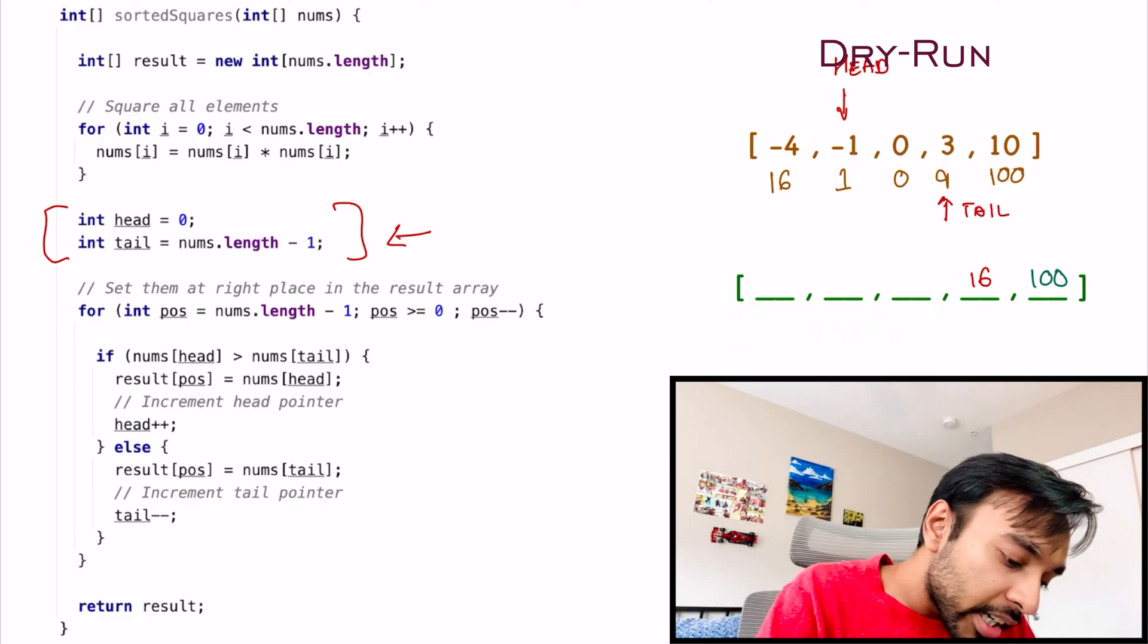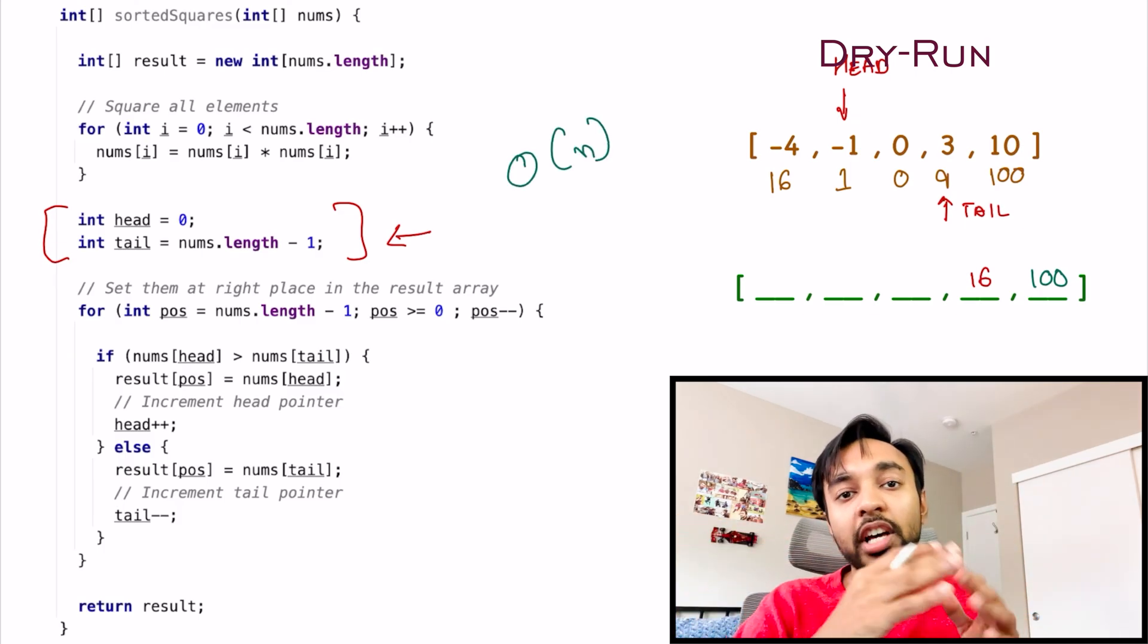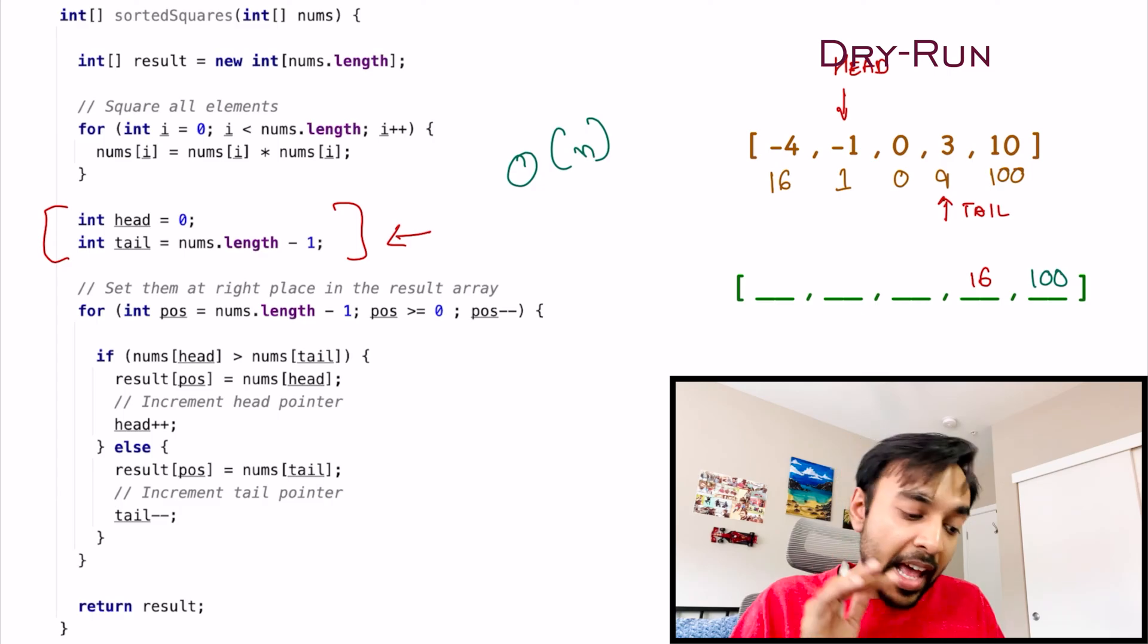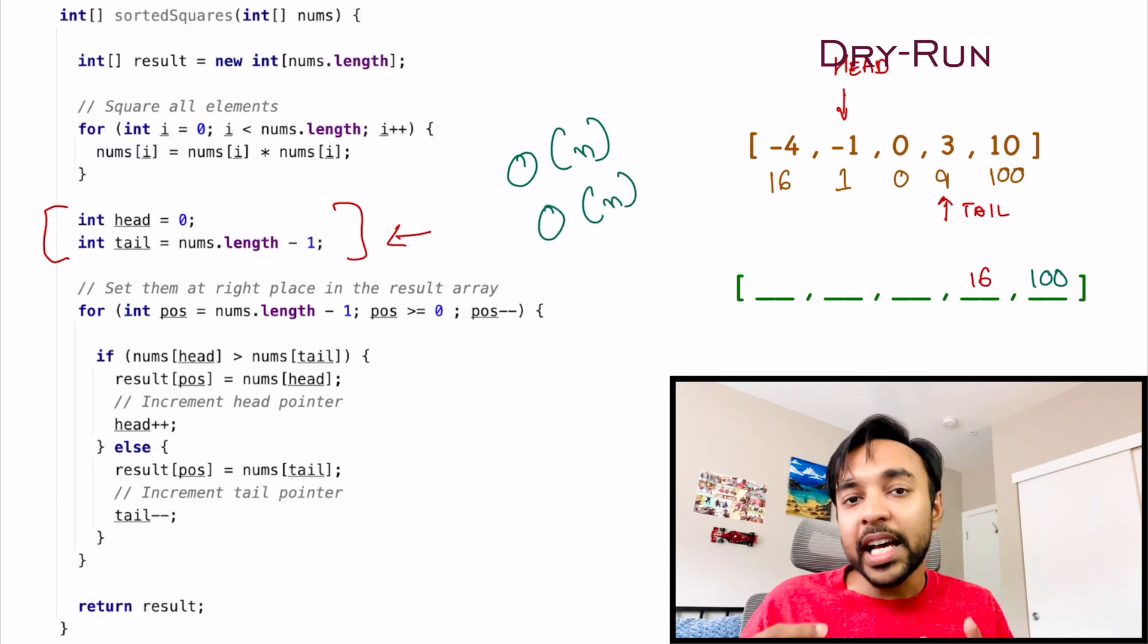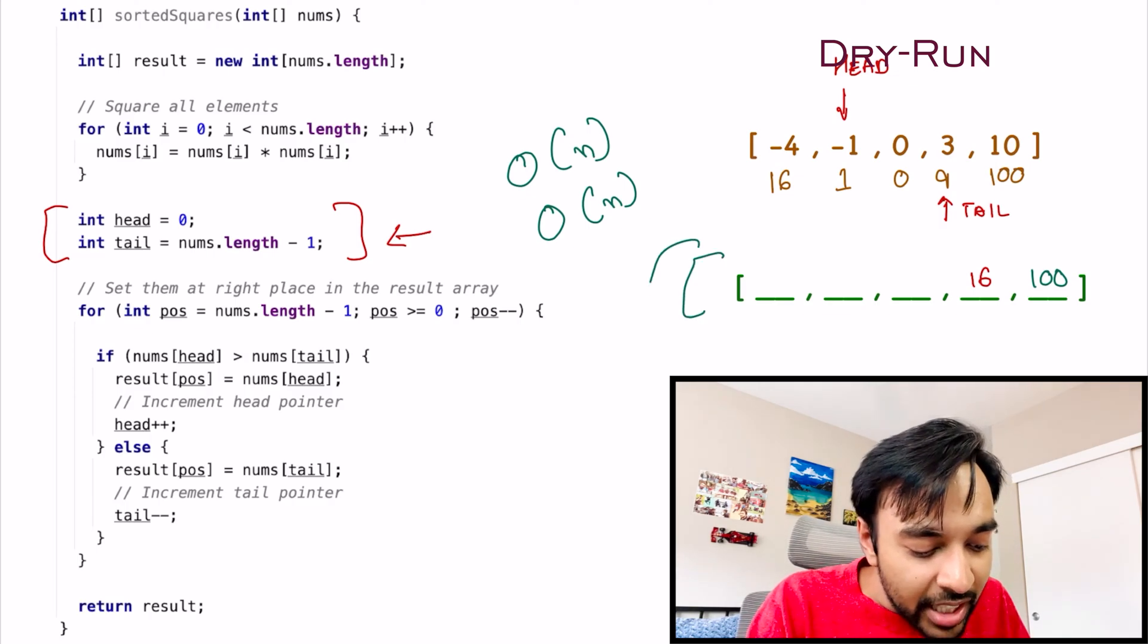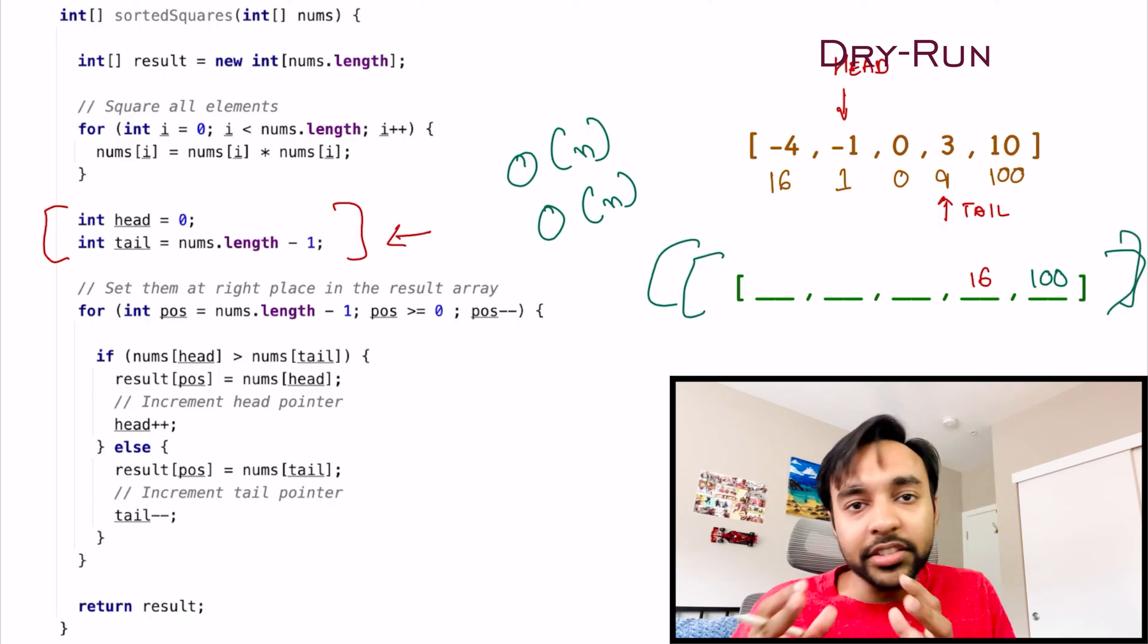Now, the time complexity of this solution is order of n. That is because we iterate through the entire array only once. And the space complexity of this solution is also order of n. That is because we create a result array that will store all of our squares. I hope I was able to simplify the problem and its solution for you.